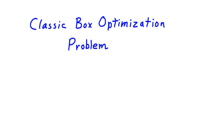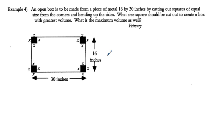This is a classic box optimization problem, a typical calculus problem. An open box is to be made from a piece of metal 16 by 30 inches by cutting out squares of equal size from the corners and bending up the sides so the sides become the flaps of the box. What size square should be cut out to create a box with maximum volume, and what is that maximum volume?